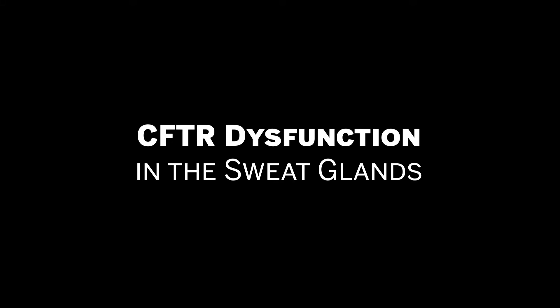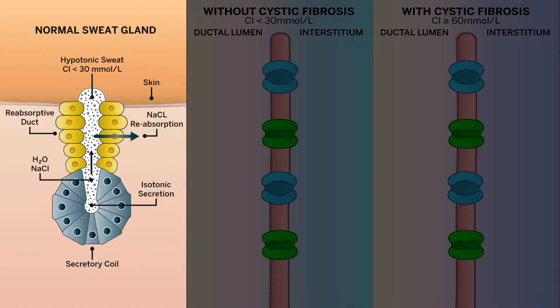CFTR dysfunction in the sweat glands. In the normal eccrine sweat gland, fluid is secreted from clear cells in the secretory coil located at the base of the gland. This fluid contains water, sodium, and chloride, among other components, and moves through the duct towards the skin surface.